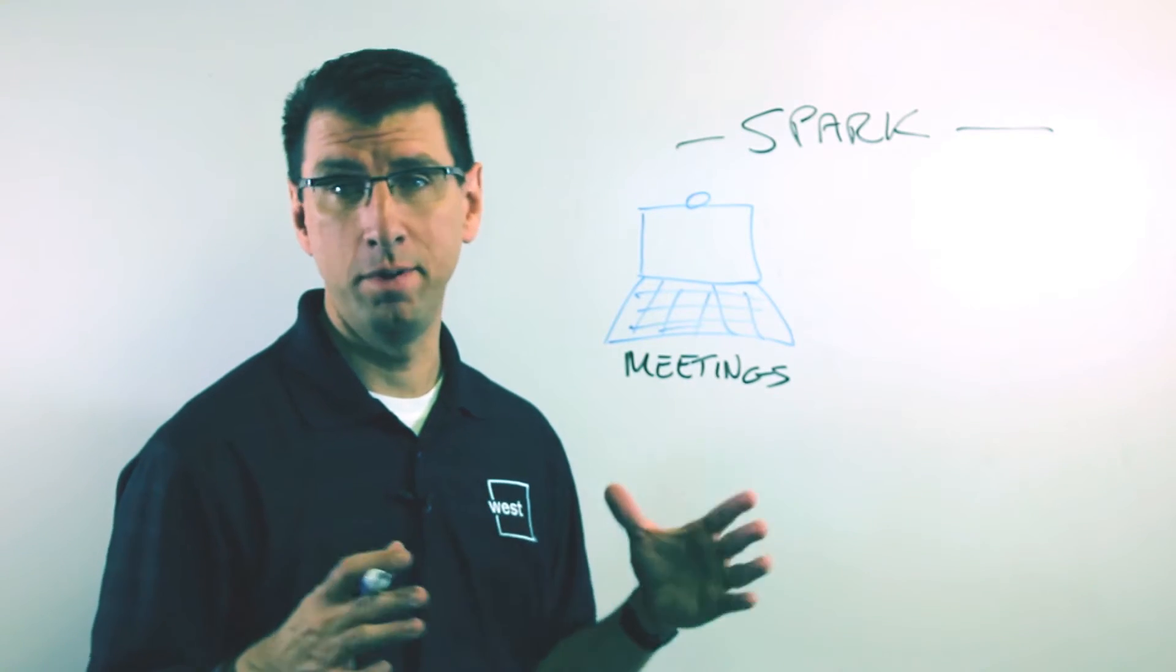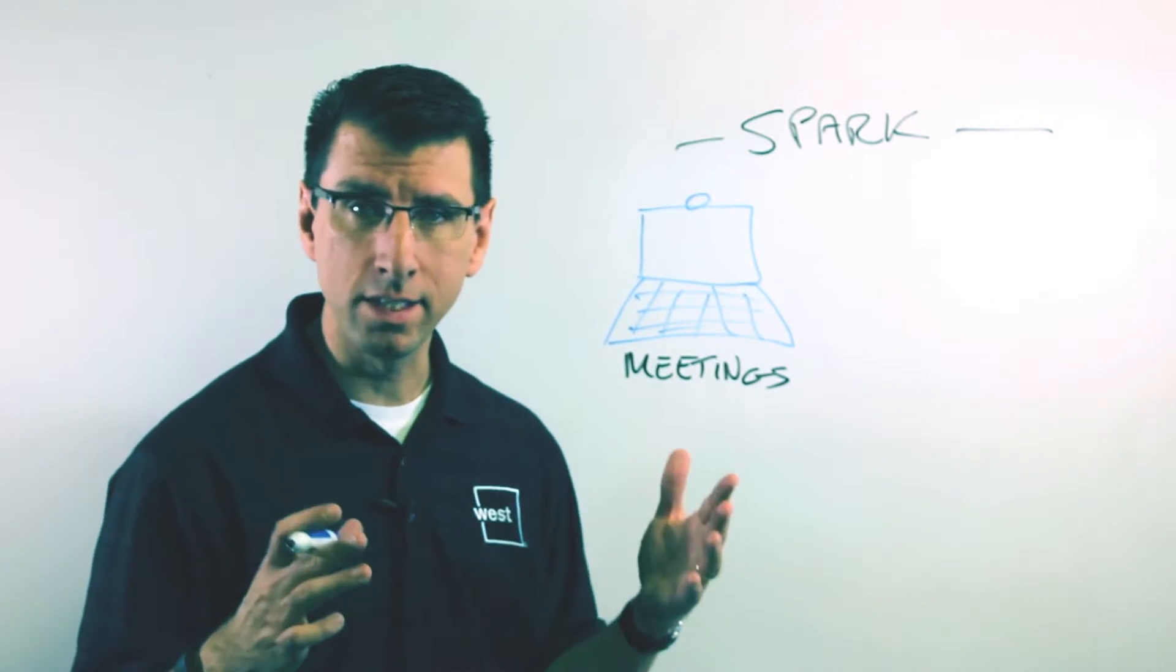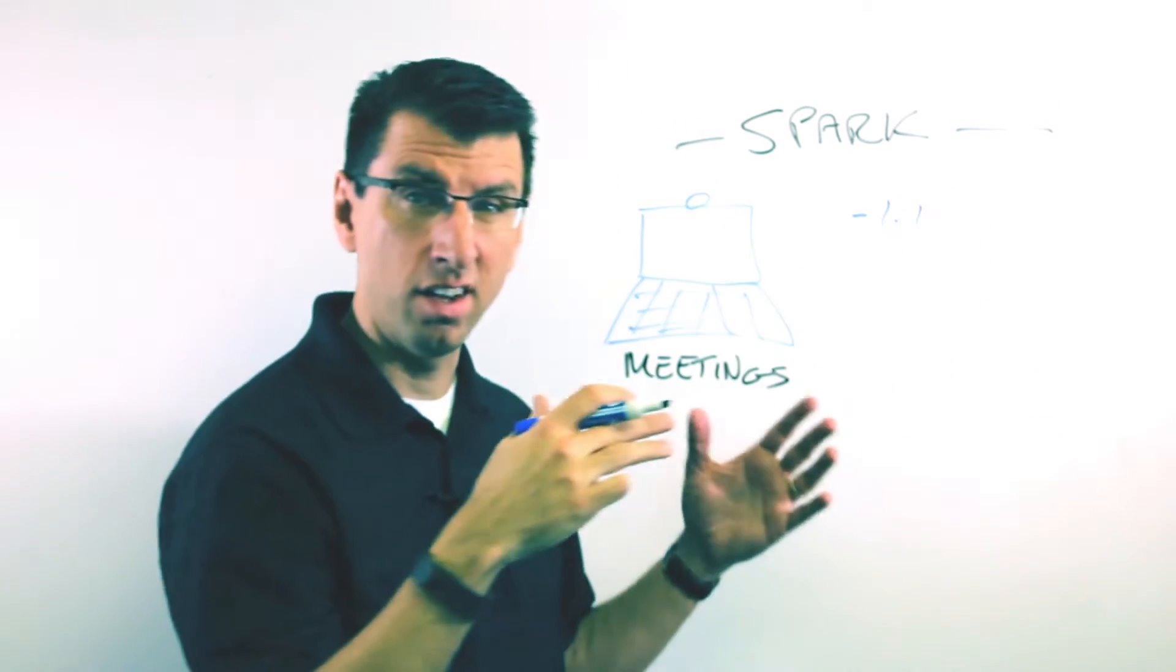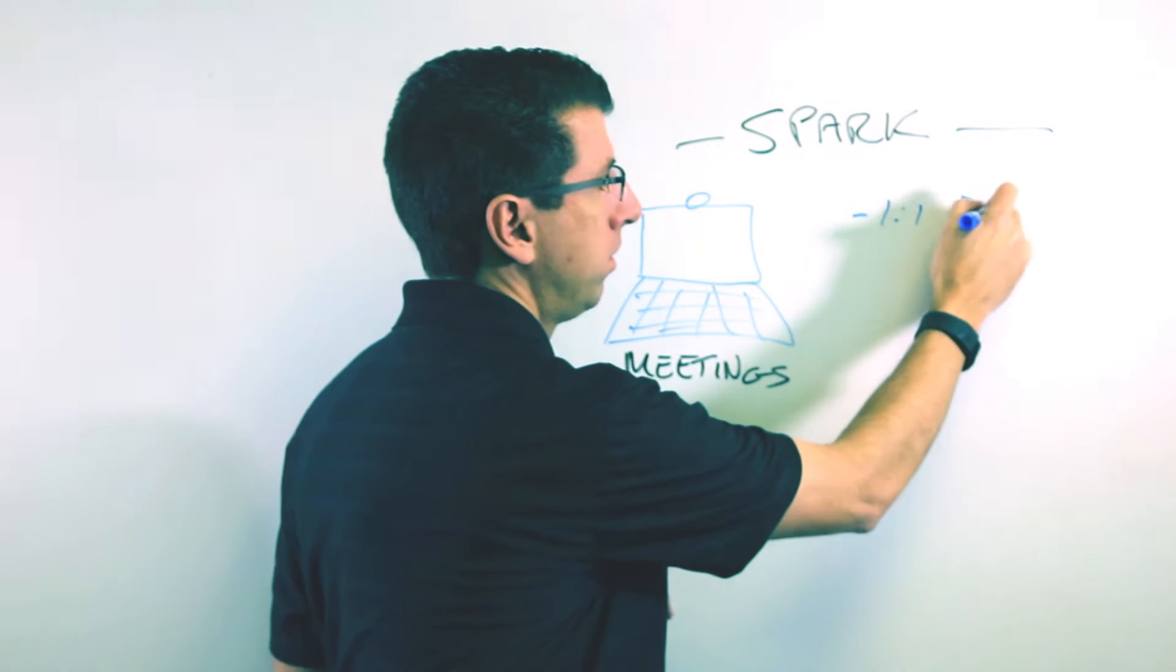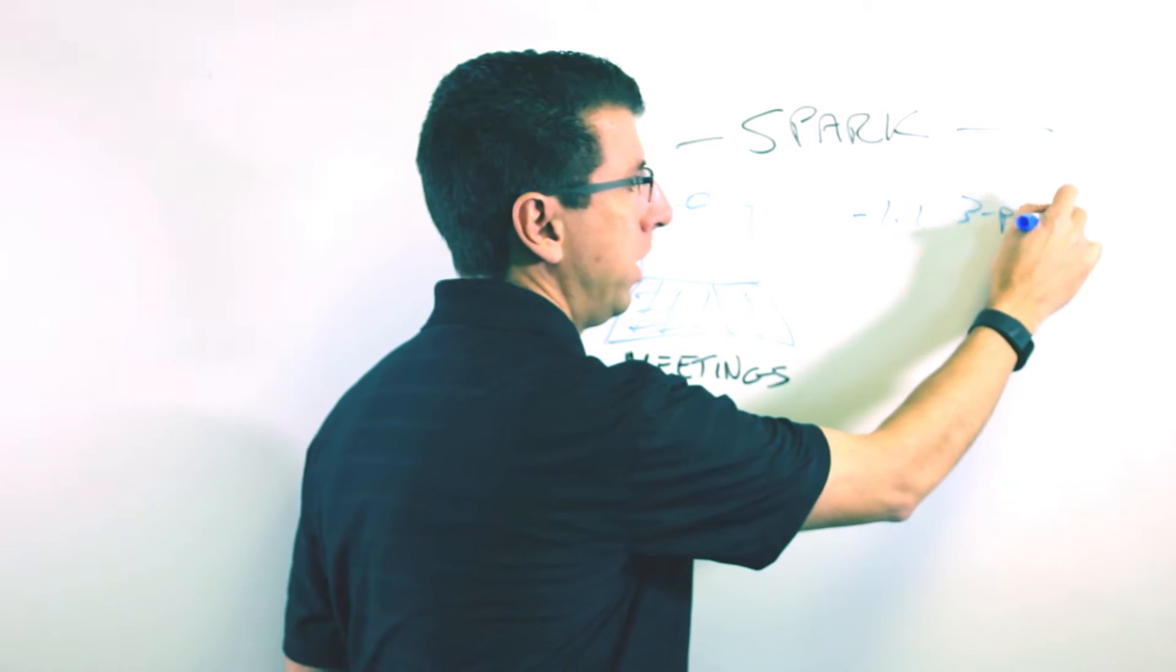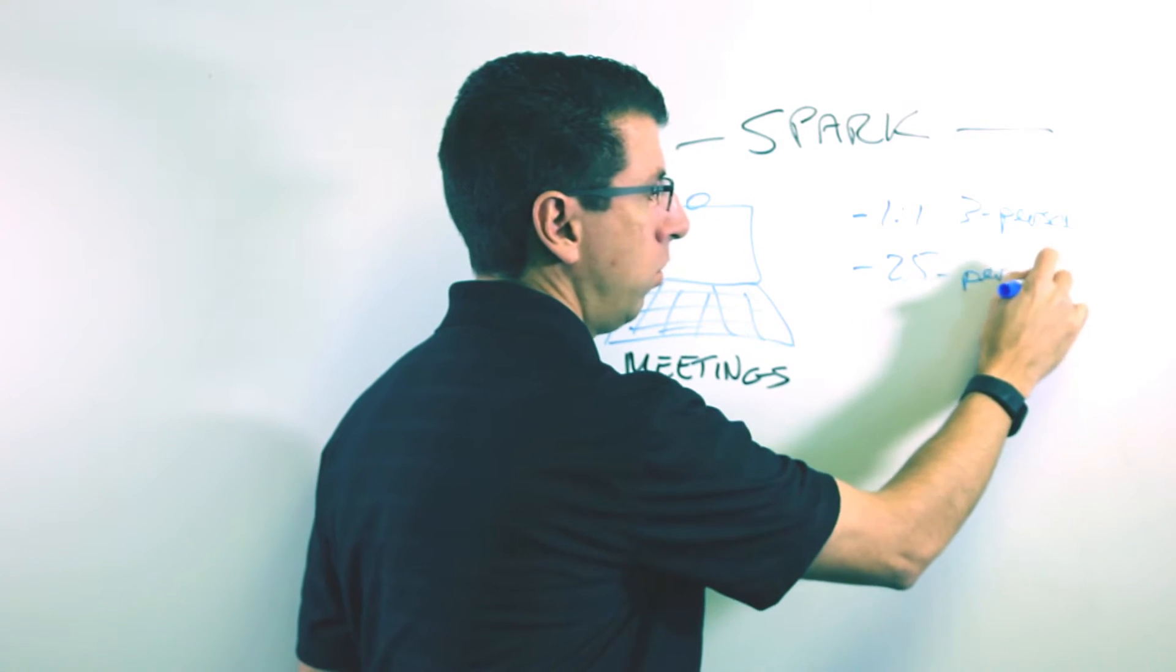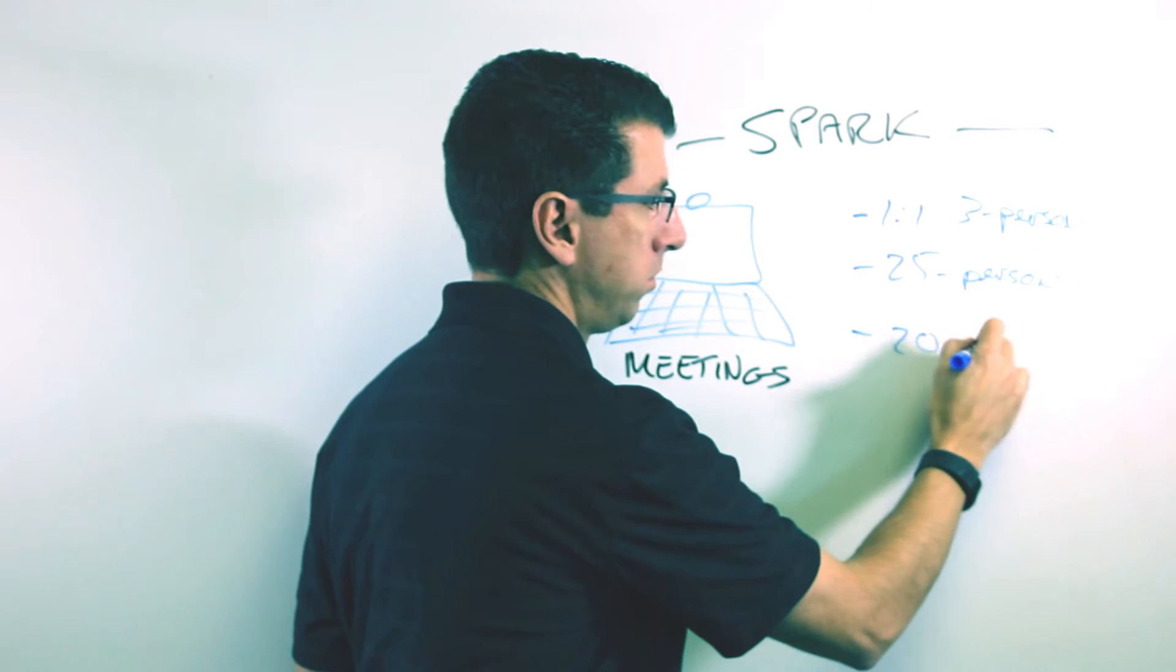So the second element of Cisco Spark is meetings. Meetings can start with simple one-on-one meetings or maybe just a three-person meeting, but it can also graduate up into 25-person meetings or even 200-person meetings.